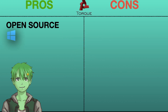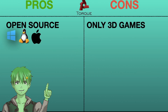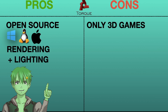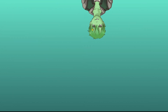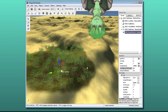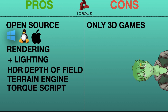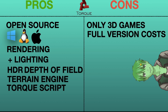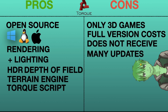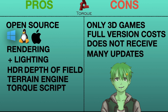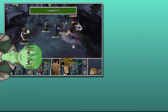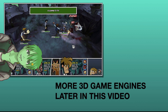Number 7: Torque3D. Torque3D is an open source game engine for Windows, Linux and Mac. As the name suggests, you can only make 3D games with it. It comes with a powerful rendering and lighting engine built in, including HDR, depth of field, reflection, glow and much more. It also features a terrain engine which allows you to import pre-made terrains or sculpt your own by hand. You write code with a custom C-like programming language called TorqueScript. Unfortunately it is a bit out of date and does not receive many updates or support anymore, so there are not that many tutorials — but it definitely features a great system for making 3D games. If you want to make 3D games with realistic graphics, there will also be some more up-to-date game engines shown later in this video.